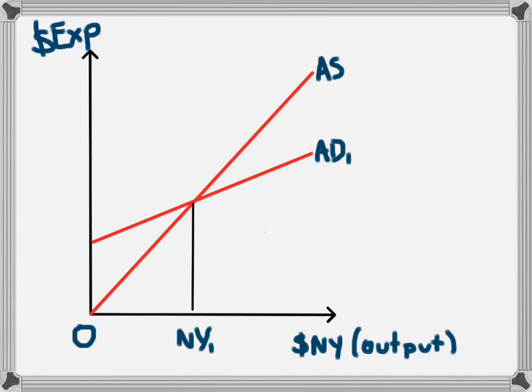This is a traditional one that most people would have seen with a 45 degree line that represented aggregate supply and an upward sloping aggregate demand curve.